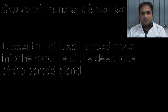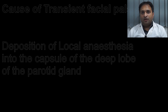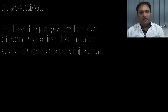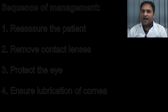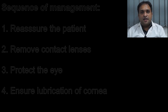Transient facial nerve paralysis is caused by the deposition of local anaesthesia into the capsule of the parotid gland, which is located at the posterior border of the mandibular ramus. Prevention is by following proper technique of injection. Management includes reassuring the patient, removing any contact lenses, applying an eye patch to the affected eye, or manually closing the eye periodically to keep the cornea lubricated. Lubricating drops can be prescribed if necessary.